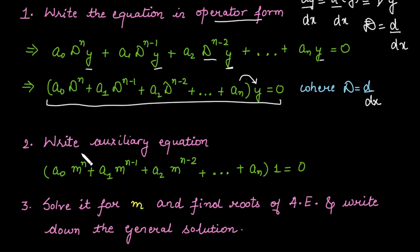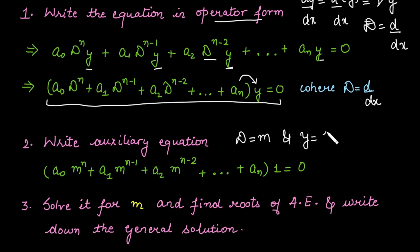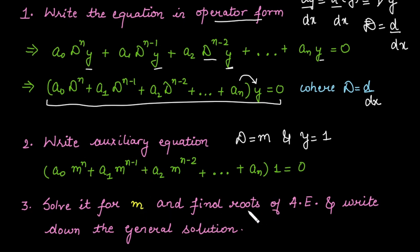The second step is to write the auxiliary equation. To obtain the auxiliary equation from the operator form, we replace D by m and y by 1. This gives a polynomial in m of degree n. We then solve this polynomial to find its roots, which are called the roots of the auxiliary equation.